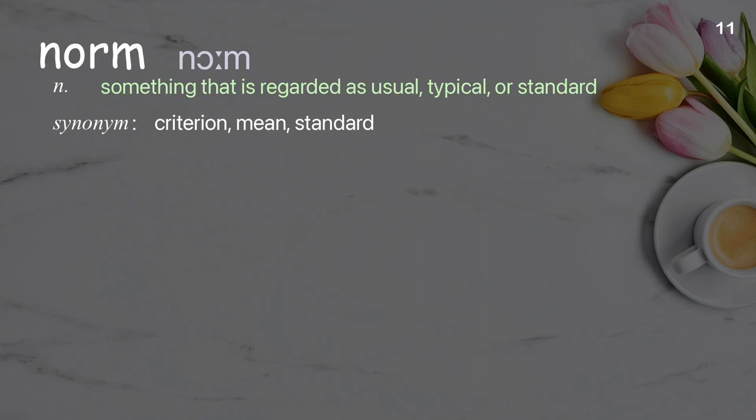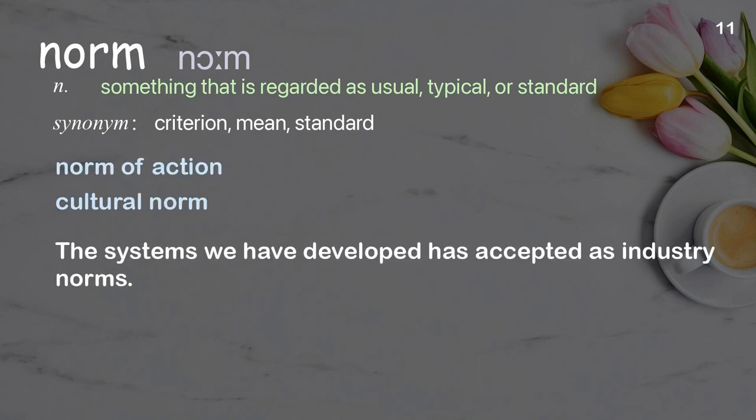Norm. Something that is regarded as usual, typical, or standard. Examples: Norm of action. Cultural norm. The systems we have developed have been accepted as industry norms.